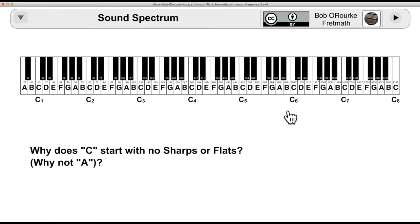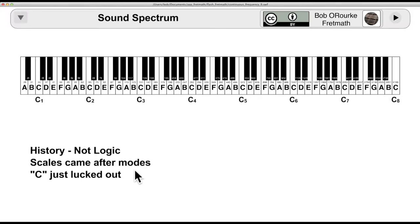The range of the piano is covered in a little bit more than seven octaves. And that covers your range of hearing over a lifetime. The white keys are all in the key of C major. The first question is, why don't we start with A major and have those as the white keys? And the answer is, it's more history than logic. The scales came after modes. And C just happened to luck out.